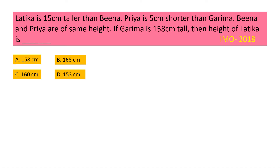Latika is 15 centimeters taller than Beena. Priya is 5 centimeters shorter than Garima. Beena and Priya are of the same height. If Garima is 158 cm tall, then the height of Latika is dash.